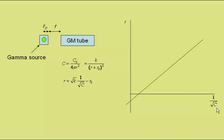The gradient equals the square root of k, where k equals C₀/4π, the entire count from the source over 4π, and the y-intercept equals minus R₀, the distance from the source to the outside of the casing.